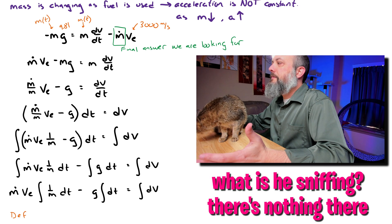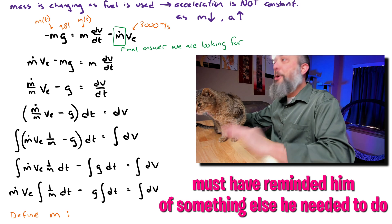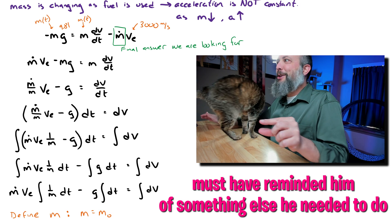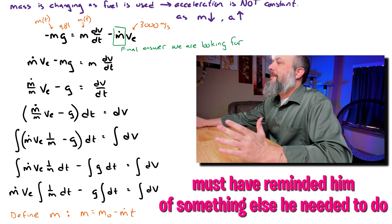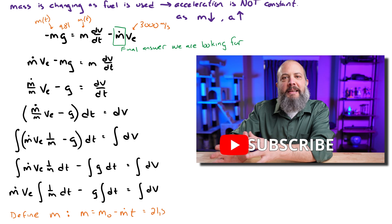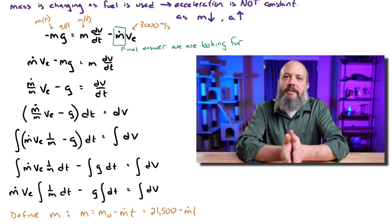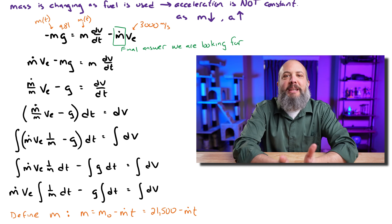Since m is a function of time, before I can do this integral of one over m, I need to actually replace it with t. I need to get time into this time derivative. So the mass of the rocket is going to be the initial mass, the 21,500, that's the rocket plus all the fuel, minus m dot t, the burn rate of fuel times time. So minus the amount of fuel that has already been expelled.